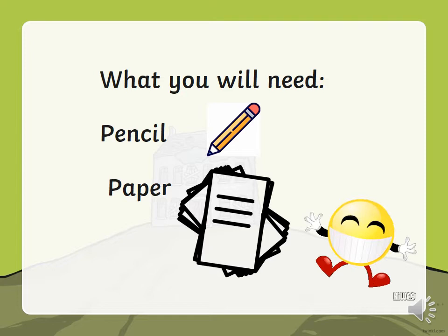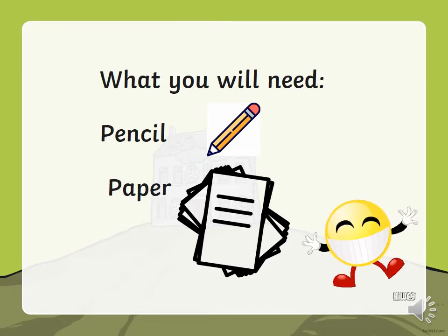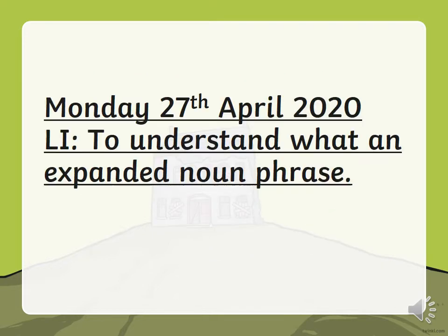For today's session you're going to need a pencil and a piece of paper. Hopefully you have it. If not, pause the video and go grab it quickly. The first thing you're going to do is write the date and the learning intention: to understand what an expanded noun phrase is. Write that at the top of your paper just like you do in your English books. Once you've done that we can move on — pause the video and start writing.